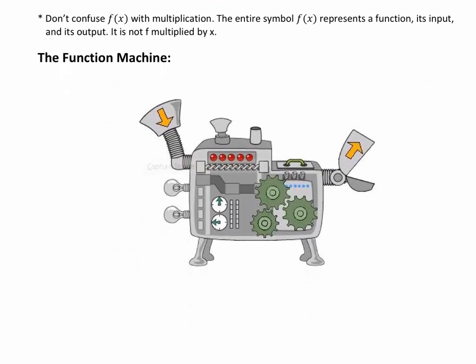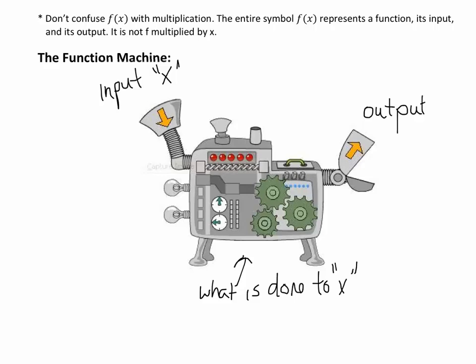You can think of functions and function notation like the function machine. In a machine you have an input going into the machine which would be our x. The machine then does some work. Basically this is our directions or what is done to x or what's done to our input that we put into our machine. And then finally our machine is going to spit our output out which is our function f(x).